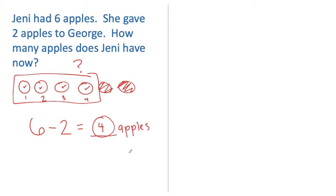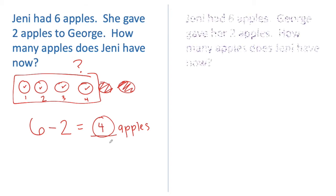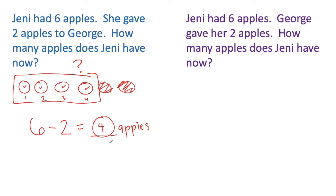Take students back through checking their work. So we just used UPS Check to solve this story problem. I want to show you one more story — listen as I read it. Jenny had six apples. This sounds really similar to the blue story we just solved. George gave her two apples. How many apples does Jenny have now? This sounds like the exact same story we just solved. Close your eyes and think about it: Jenny had six apples, George gave her two apples, how many apples does Jenny have now?